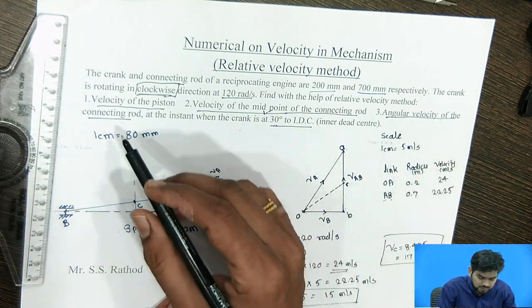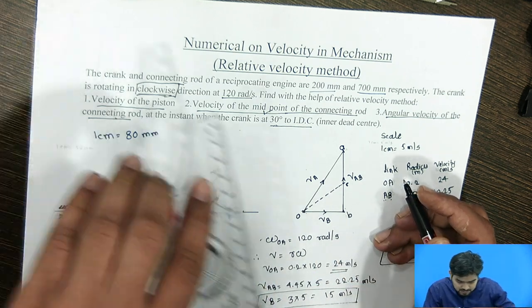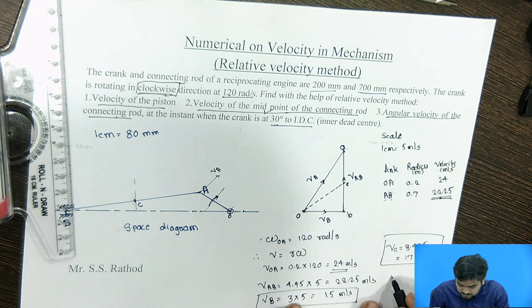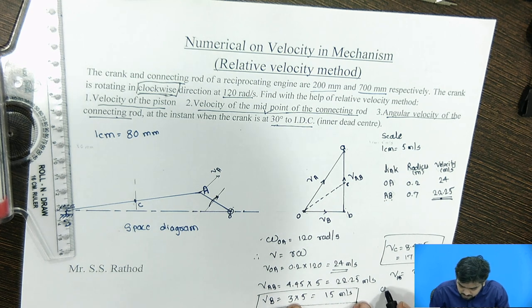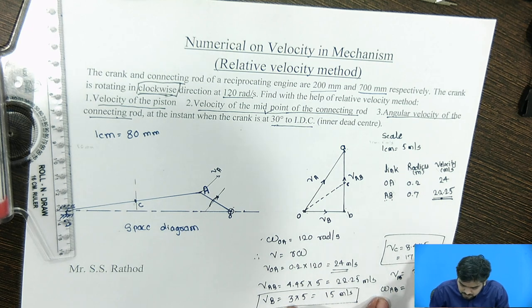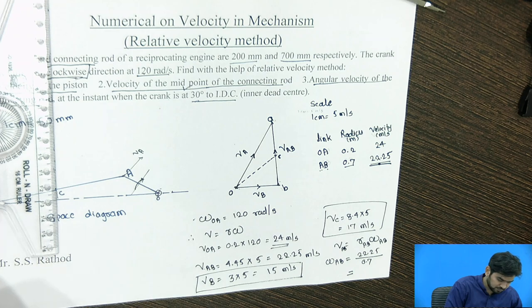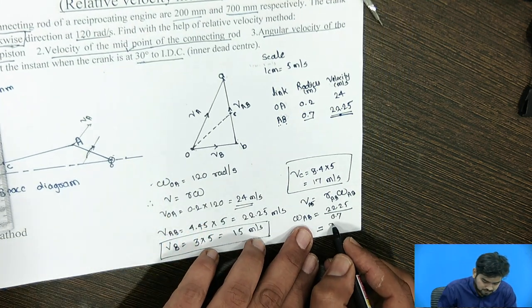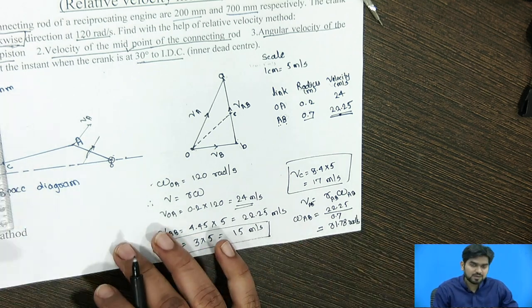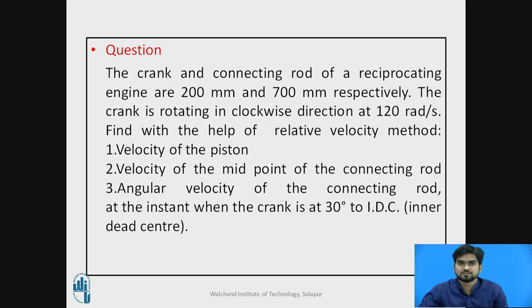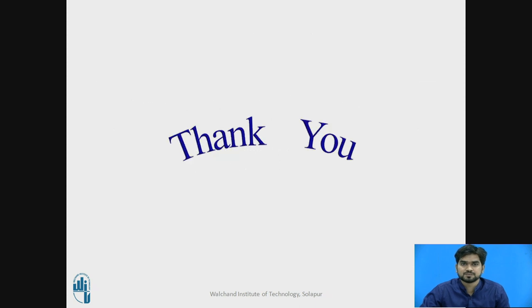Next, they asked for the angular velocity of the connecting rod. AB is the connecting rod, and we have already calculated the velocity of AB as 22.25 m/s. Using the relation V = R × omega, angular velocity of AB = velocity of AB ÷ radius of AB = 22.25 ÷ 0.7 = 31.78 radian per second. In this way, we calculate the velocity as well as angular velocity of each element in the given mechanism. Thank you.